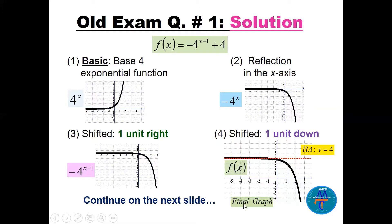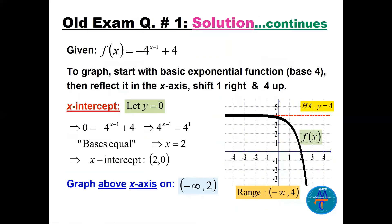This is the final graph — the green curve labeled f. To find the x-intercept, set y = 0. Since the bases are both four, x minus one equals one, so x = 2. The graph is above the x-axis from negative infinity until x = 2. The range is from negative infinity to 4, stopping at the horizontal asymptote.